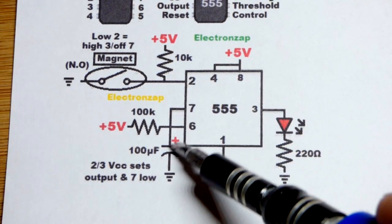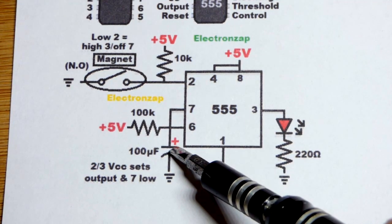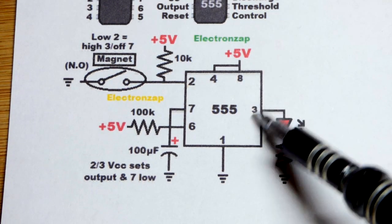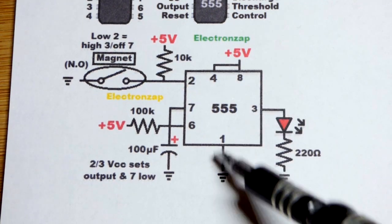So pin number two is the trigger pin. We got the capacitor here, the resistor, they set the timing. Normally pin seven is connected to ground, that's also when the output is low, so both of these two pins are connected directly to ground for the most part - the discharge pin and the output pin.